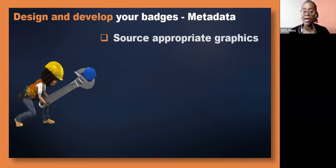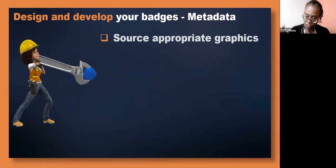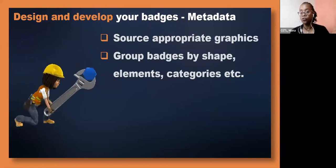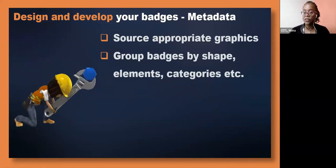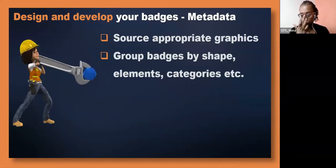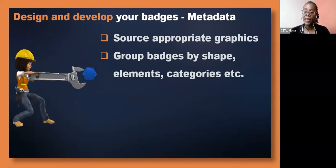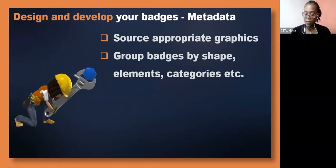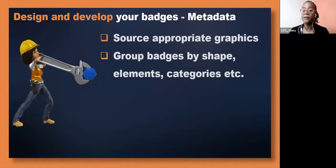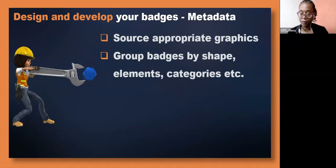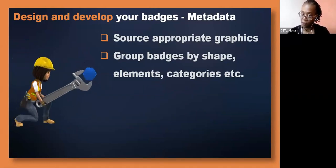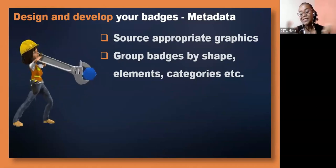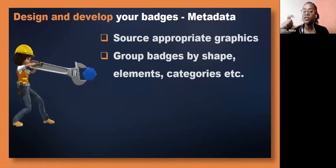When developing your badges, it may be a good idea to group them — especially if using a tiered or hierarchical structure. You may want to group your badges by shape, elements, categories, or classifications for consistency and organization. Consider also grouping by color — green for novice level, blue for intermediate, and so on. This makes logistics easier and gives your badge system a coherent, organized appearance.